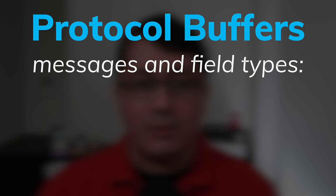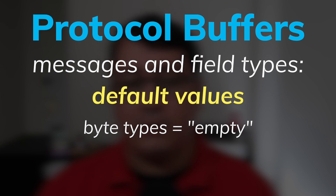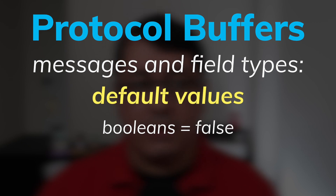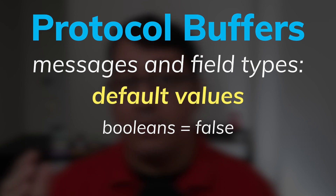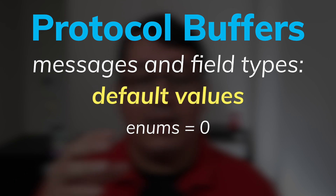If you're familiar with Go, this will be the equivalent to zero values. So numeric types default to zero, byte types default to empty, booleans and enums default to the value of zero, which you should define. I will be covering that in a few seconds.